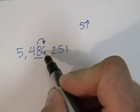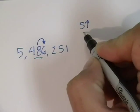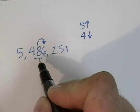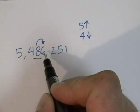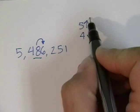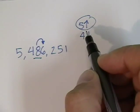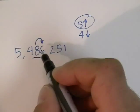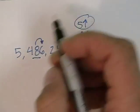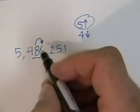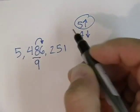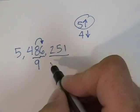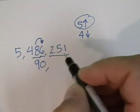If this number to the right is 4 or less, this 8 stays the same. So we look to the right — it's a 6. A 6 is 5 or more, so this 8 becomes one more — the 8 becomes 9. All these other numbers after this become zeros, and we copy the comma in the right place.